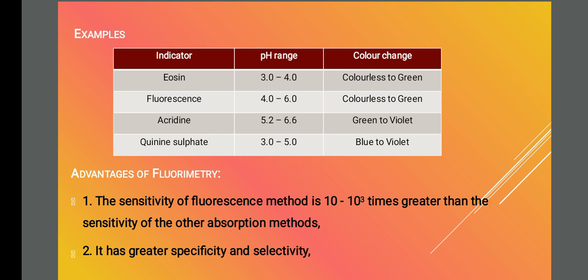So eosin, fluorescein, acridine, and quinine sulfate are used as fluorescent indicators.